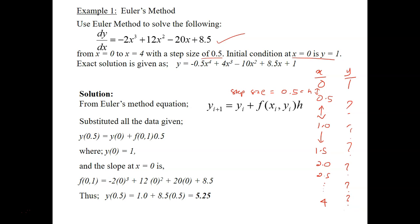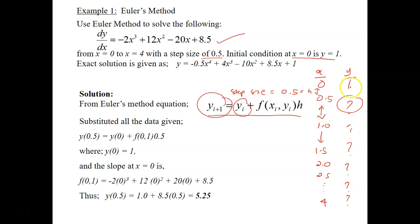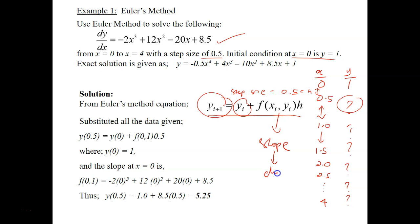This is the general formula of Euler's method. yi+1 — the value you are trying to predict — equals the old y (yi) plus the slope, using the previous data point at xi, yi, times the step size. The slope is the same as dy/dx.